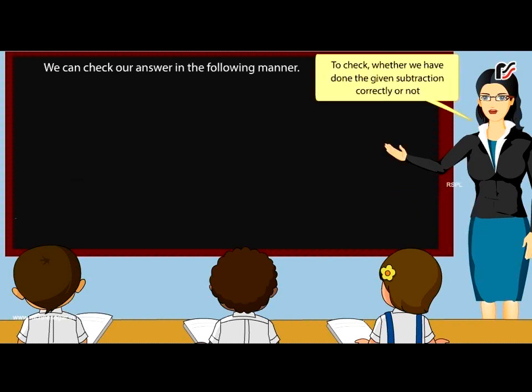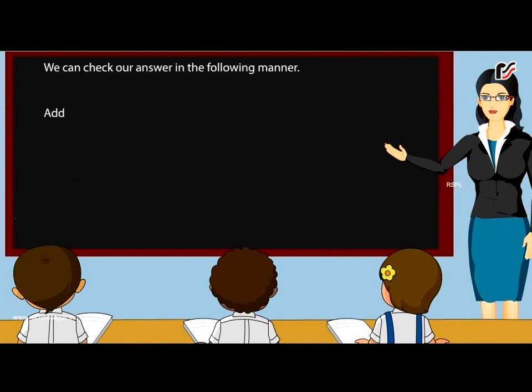To check whether we have done the given subtraction correctly or not, add the difference (151,081) and the subtrahend (317,354) to get the minuend (468,435). Hence,